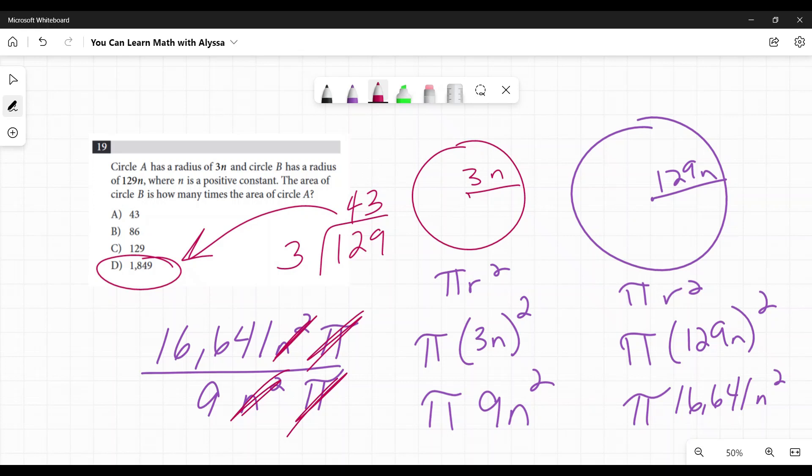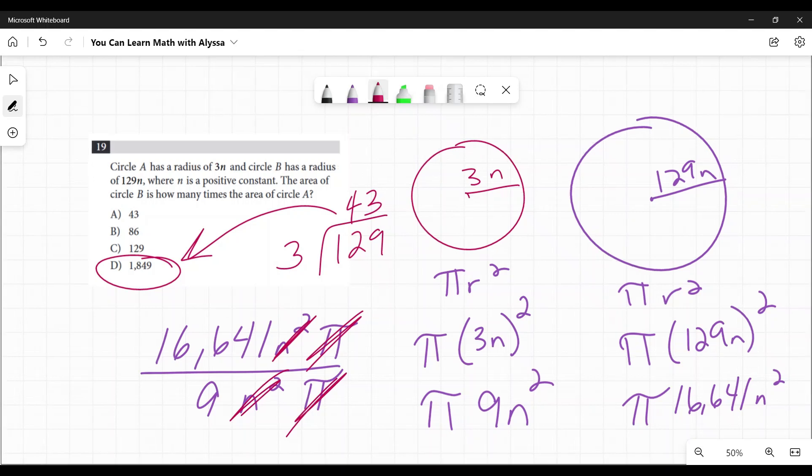Again, if you're using a calculator, there's no real difference in the amount of time it takes to do that. If you're having to do this kind of problem longhand on paper, it will save you some time to get that realization. You can just find the difference between those lengths and then square it to get the difference in the areas.